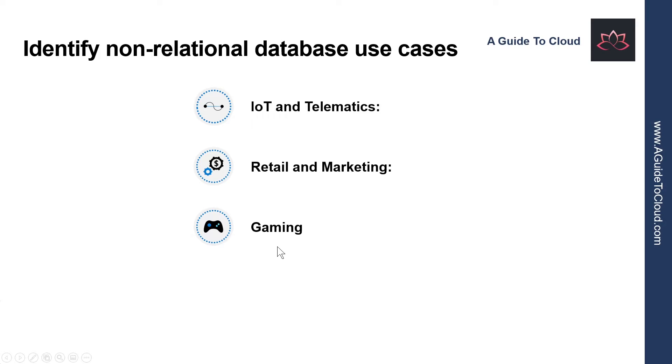The next use case scenario is for gaming. So, the database tier is a crucial component of gaming applications. Modern games perform graphical processing on mobile or console clients but rely on the cloud to deliver customized and personalized content like in-game stats, social media integration and high score leaderboards. Games often require single millisecond latencies for read and write to provide an engaging in-game experience. A game database needs to be fast and able to handle massive spikes in request rate during new game launches and feature updates.